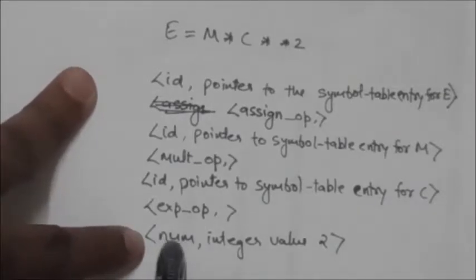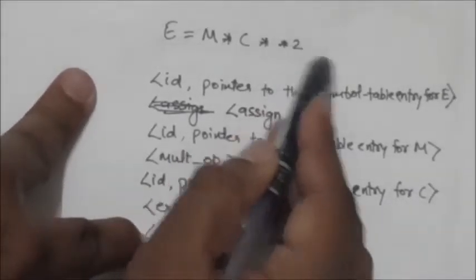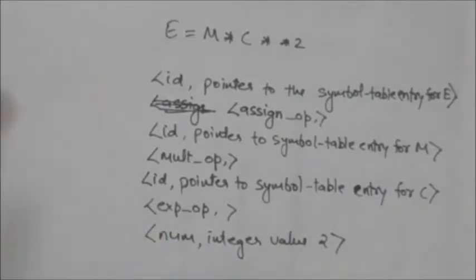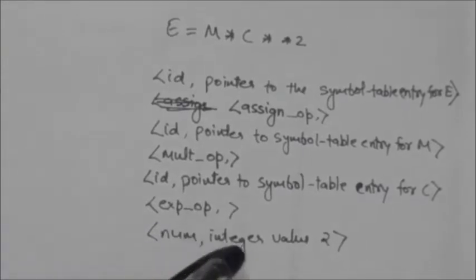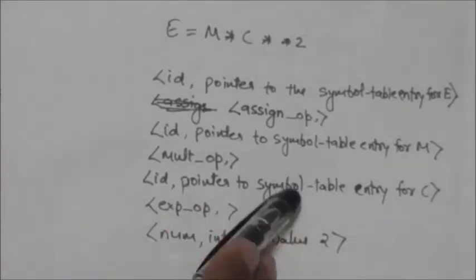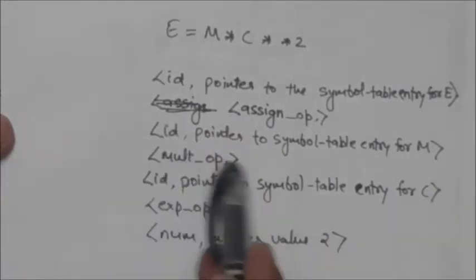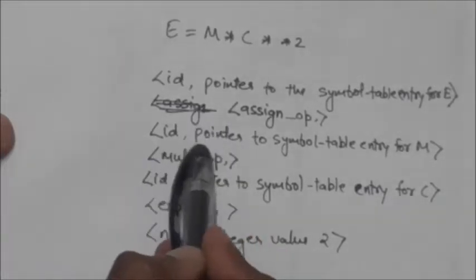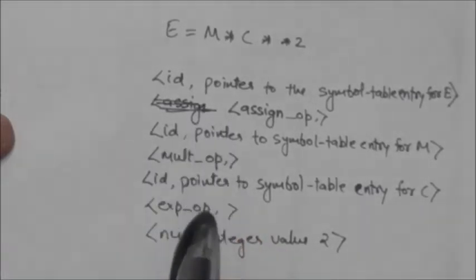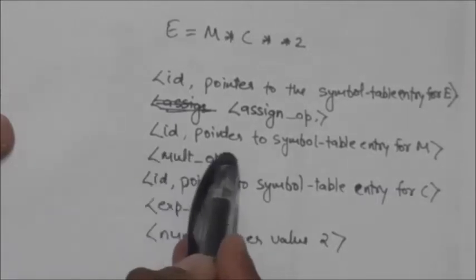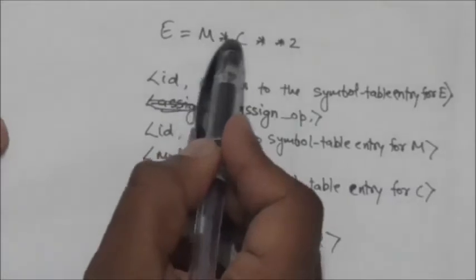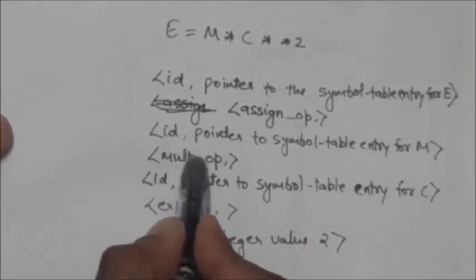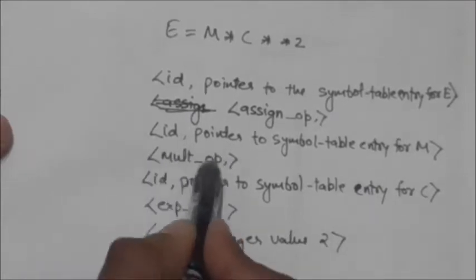Now you can see this 2 — it is a number. The token for this 2 is 'num', and the attribute value associated with this token num is the integer value 2. In certain pairs there is no need for an attribute value, because the first component alone is sufficient to identify the lexeme — for example, a multiplication operator needs no attribute value.